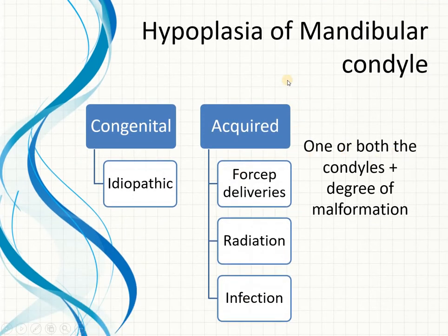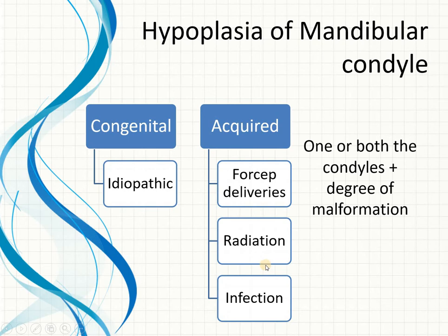Hypoplasia is a small-sized mandibular condyle. It can be a congenital defect of unknown cause — hence idiopathic. In earlier times, forcep deliveries used a forcep held at the level of the mandibular condyle, which led to trauma and hypoplasia. Apart from these, infections and radiation injury can also give rise to hypoplasia of the mandibular condyle.